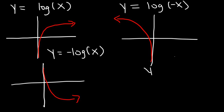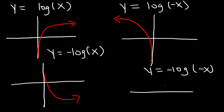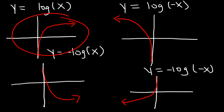And the last one, where y and x are both negative, this is going to occur in quadrant 3. This reflects across the origin relative to the original function. So those are the four basic logarithmic functions that you need to know, using transformations of course.